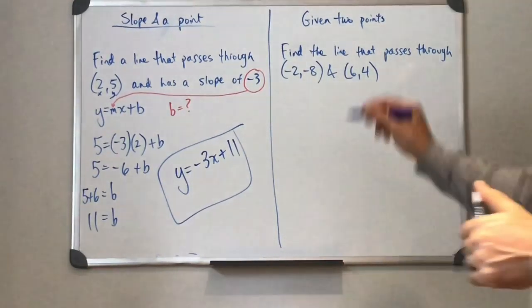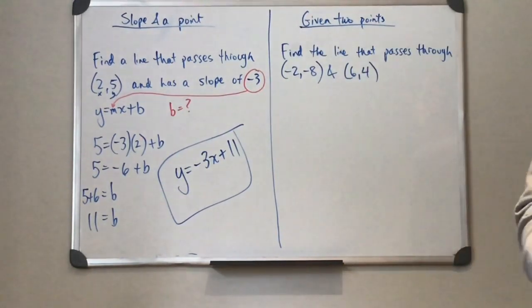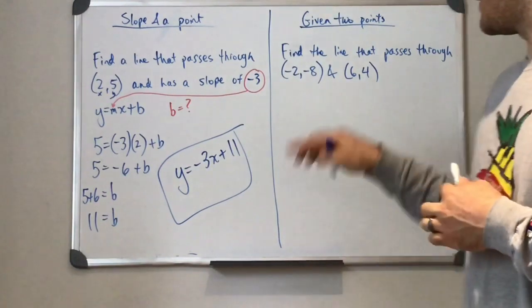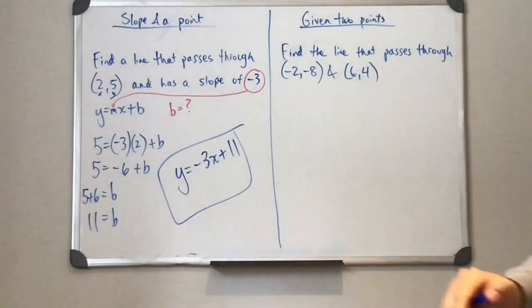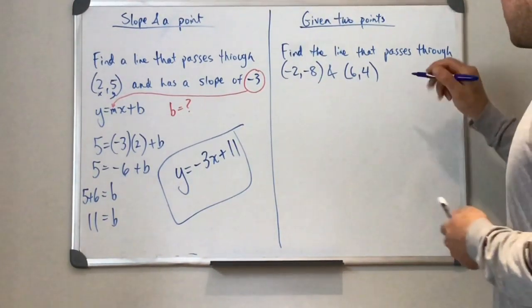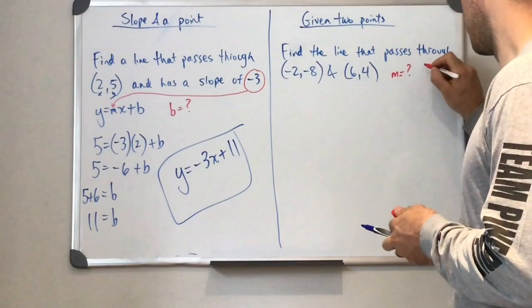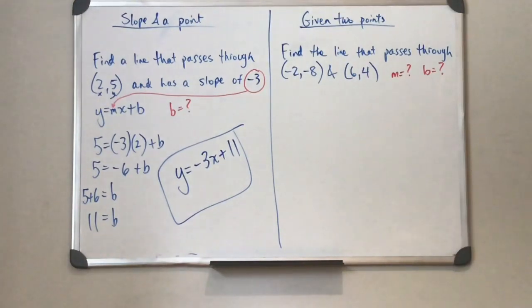Given two points, this one is going to be a little bit more work, but we're going to do some similar stuff here. So in this one, we were given the slope. Here we are not given a slope. We're not given a y intercept. So at this point, we don't know the m or the b.